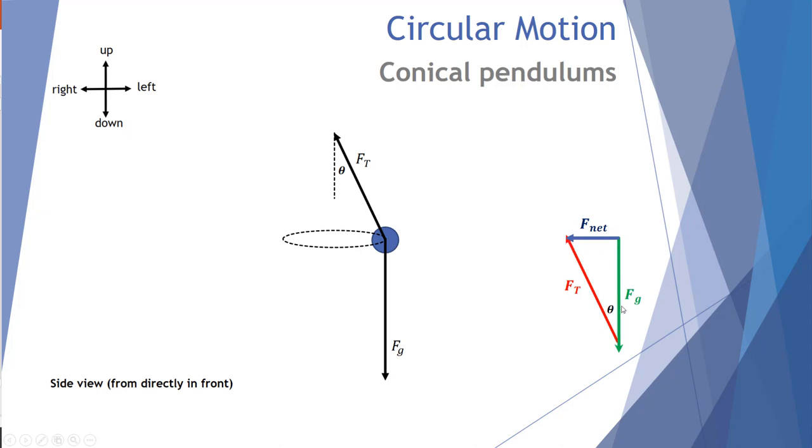So this is the vector addition of Fg, gravitational force, Ft, the tension force, and the resultant produced vector force is the force of the net. So in terms of our diagram, that generates a centripetal force towards the center. That is our net force.